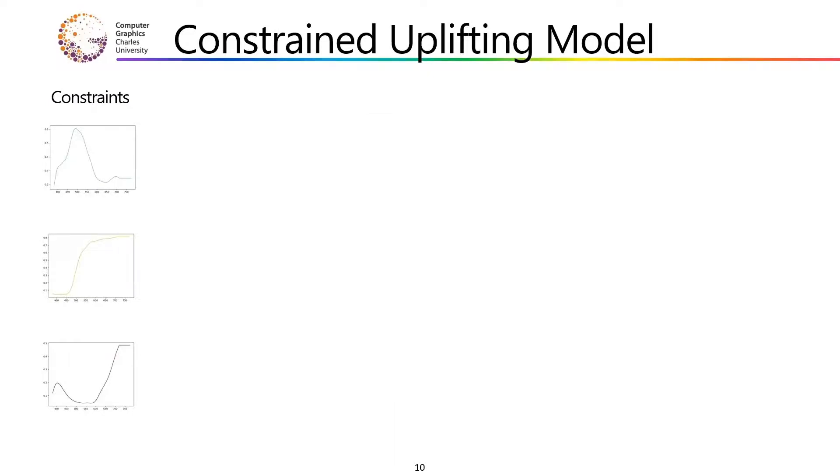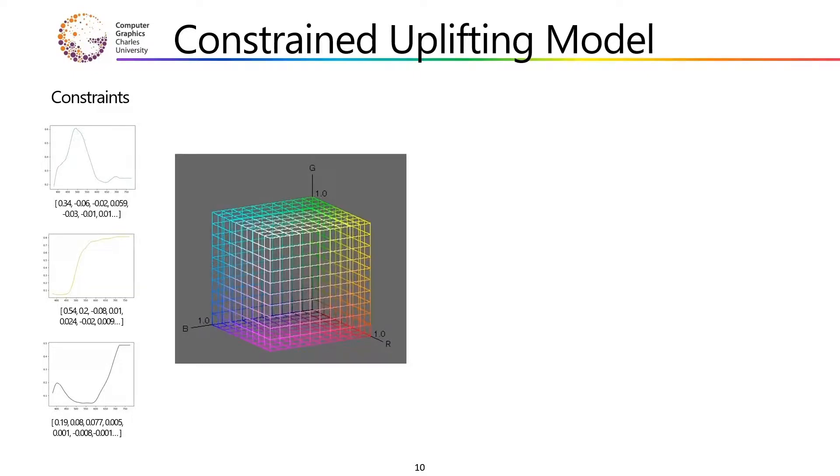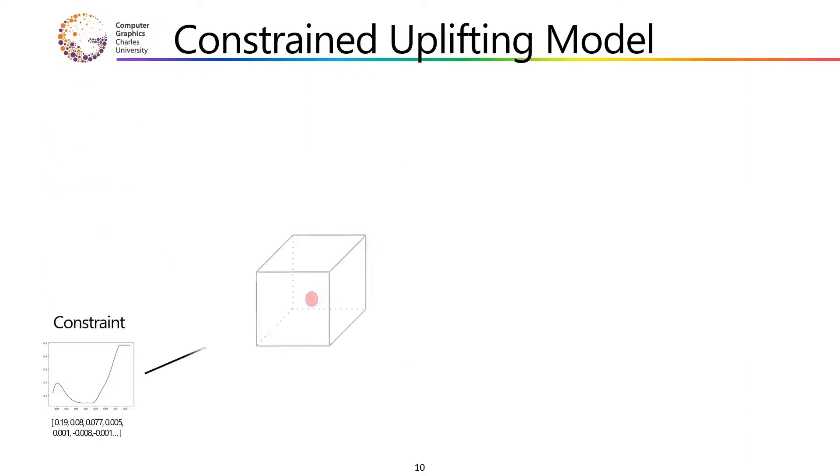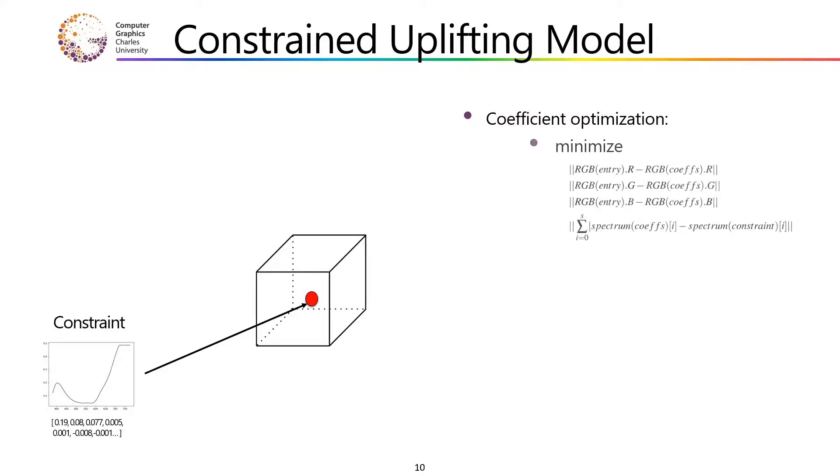So, in our uplifting model, for each of the constraints, we first obtain their moment-based representation. Now, we wish for the RGB values of these constraints to uplift the constraints perfectly during the voxel interpolation part of the uplifting process. Therefore, all of the corners of the constraints' voxels must contain information about the original spectral shape. Therefore, for each of the constraints, we use its coefficients as prior for the optimization process. To preserve the shapes of the reflectance spectra of the constraints, in addition to minimizing the RGB differences, we also minimize the difference between the shape of the original constraint and a curve that the coefficients currently reconstruct.